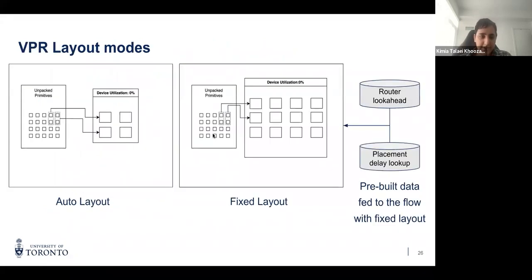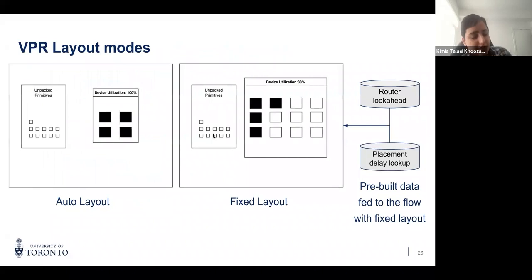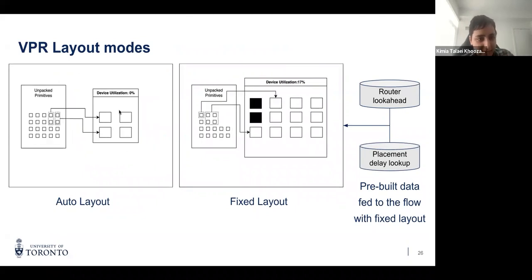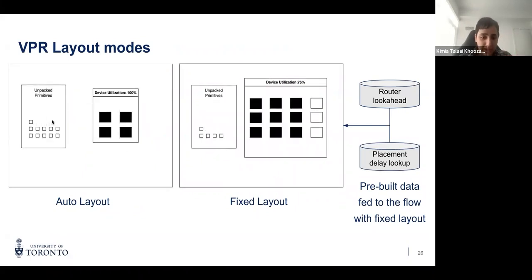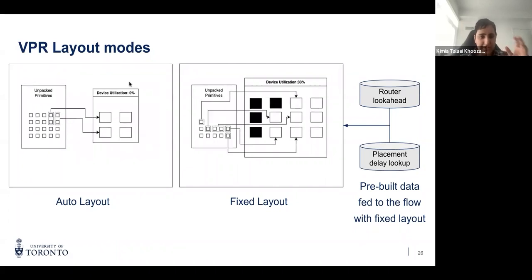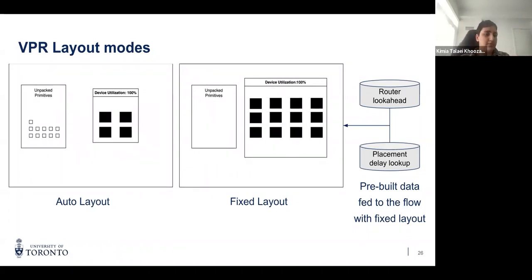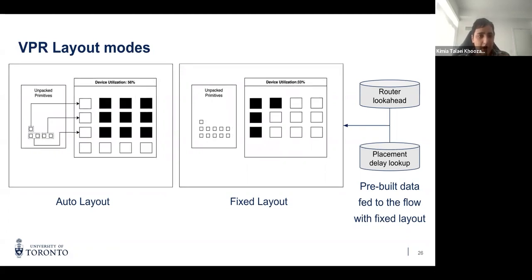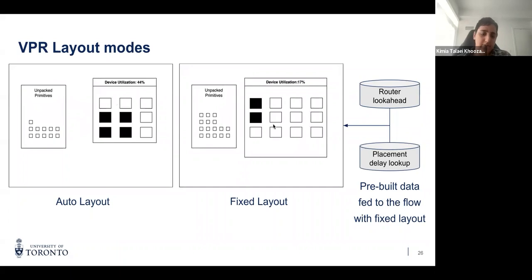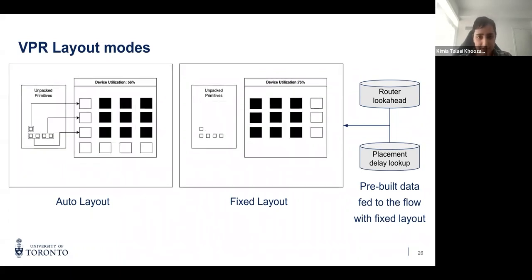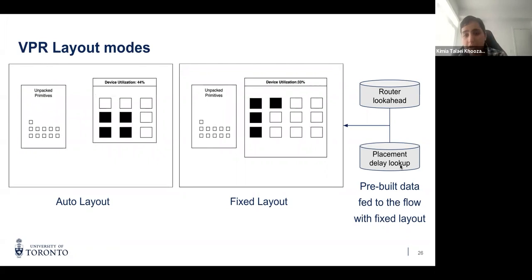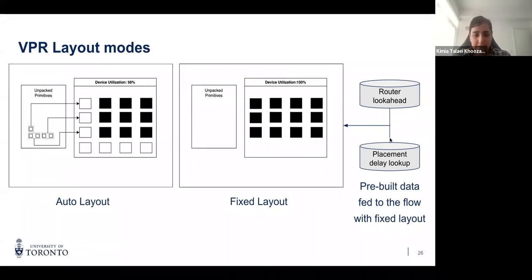To run VPR in fixed mode, we provided layouts of five different Intel devices in different size ranges, with each benchmark mapped to the smallest device that can fit the design. In auto layout mode, VPR starts with a smaller grid, packs primitives into blocks, monitors device utilization, and resizes the device when utilization gets high. With fixed layout, the grid size is fixed and doesn't get resized, allowing prebuilt data structures to be fed in to save runtime.